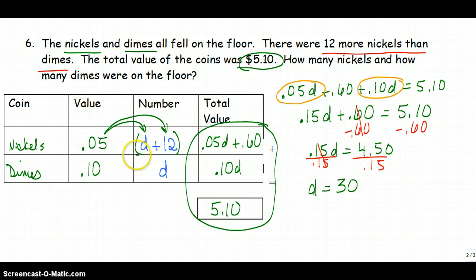Well, if I have 30 dimes, my nickels are d plus 12. So my number of nickels is equal to the number of dimes, which is 30, plus 12 is equal to 42. So I have 42 nickels and 30 dimes.